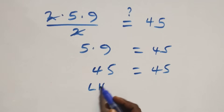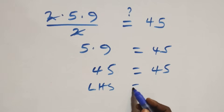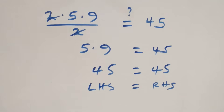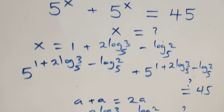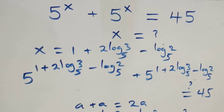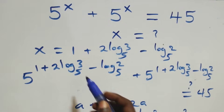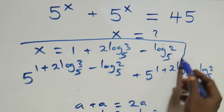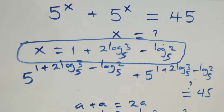5 times 9 gives us 45, which equals 45. The left-hand side equals the right-hand side, and therefore we conclude that x equals to 1 plus 2·log₅3 minus log₅2 satisfies this given problem. Thank you for watching, don't forget these steps.